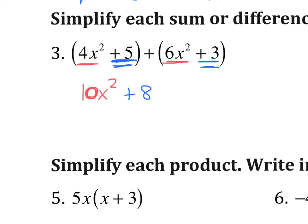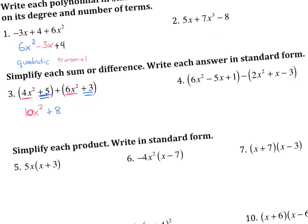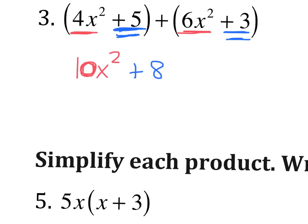So here is my standard form. If we were asked to name it, which we aren't, but if we were to name it, this would be a quadratic because the highest exponent is a 2. And there are two terms. So it's a binomial, quadratic binomial.